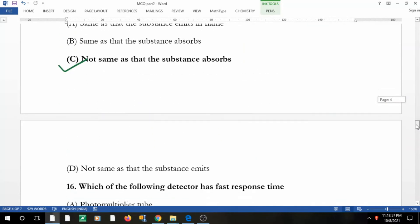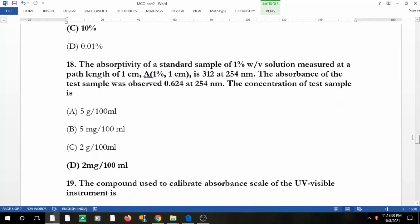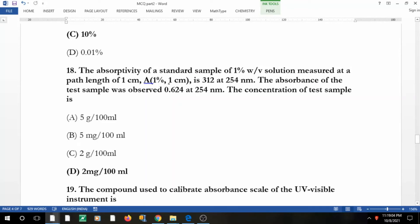Coming to the next question: absorptivity of standard sample of solution measured at path length—this is 312. That means if A is equal to epsilon c l, then epsilon is 312. The absorbance of the test sample was observed this at 254 nm. You have to find out the concentration. Absorbance 0.624 is equal to this, c you have to find out, and length is given one centimeter. If I solve this, c I'll get this.